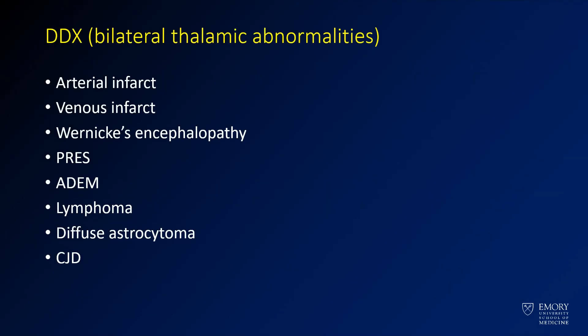When you have bilateral thalamic abnormalities, you should think about arterial infarcts like Artery of Percheron infarcts, but there are a number of other diagnoses to consider. You should consider venous infarcts, Wernicke's encephalopathy, PRES, ADEM, and lymphoma. You can sometimes get diffuse astrocytomas or tumors involving both sides, but those almost always have some contiguous connection. CJD is a neurodegenerative disease in which you can see thalamic FLAIR abnormalities, though they tend to be less abnormal on diffusion.